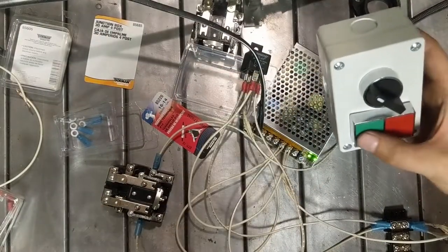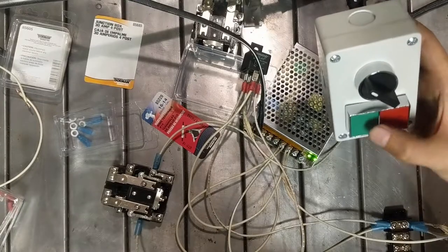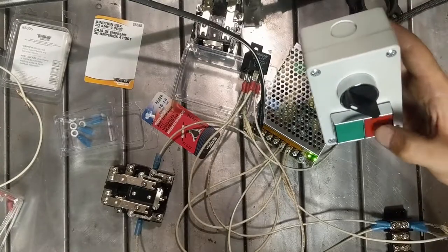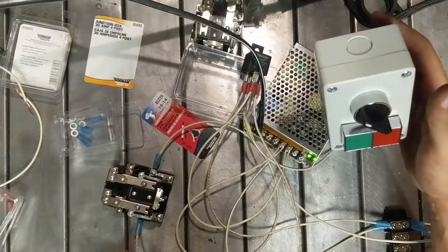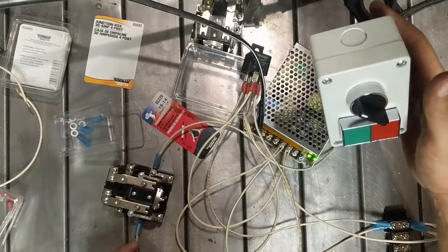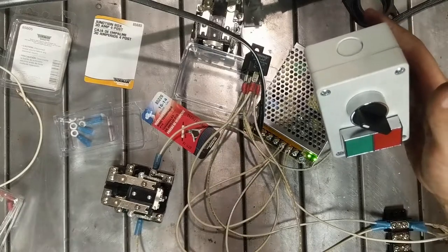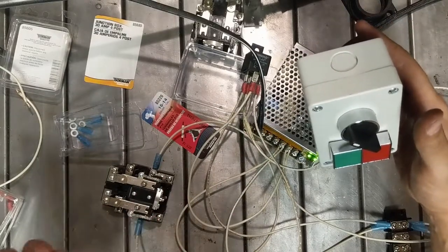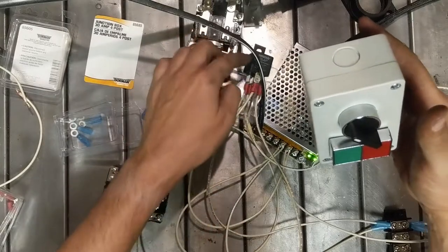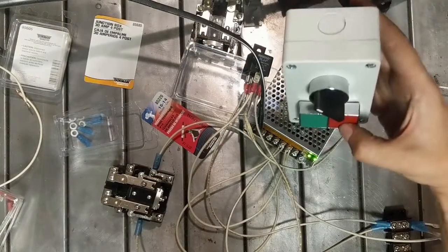I needed to make one small change here - the seal-in relay needs to be in parallel with this, not in series. Reason for that, these are fairly high impedance. Putting them in series you're halving their operating current and the seal-in relay wasn't picking up.